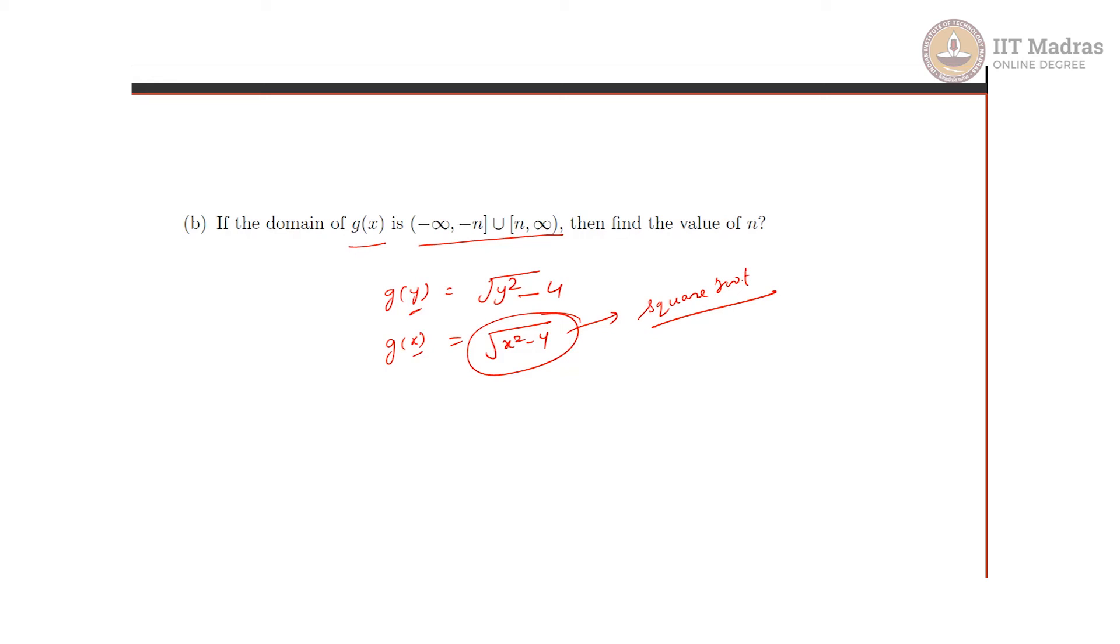We know that the square root function is not defined when the value inside is negative. It means this value should not be less than 0. We will find when this value is less than 0. So x² - 4 < 0.